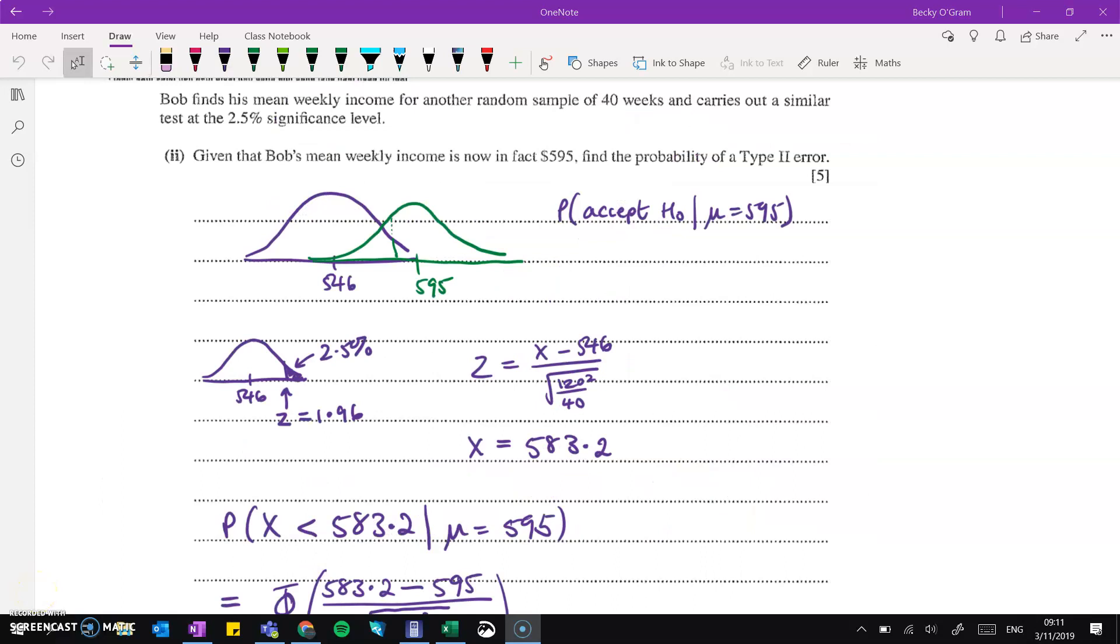Then part two asks us to work out the probability of a type 2 error if his weekly income has actually gone up to 595. So that's the probability that we made the decision to accept the null hypothesis that his mean hasn't changed when it actually has. So we've accepted this original purple distribution underneath, when actually it's changed to the green one of 595. Now, the conditions where we will accept that purple distribution is if we end up not in that 2.5% tail of the purple distribution. So the z value there is 1.96. Just reading off your tables. Now, if we set that z would be equal to x minus the mean over the square root of 120 squared over 40, that's from doing it on a sample, remember. So rearranging that would give us an x value of 583.2. That's going to be our critical x value.